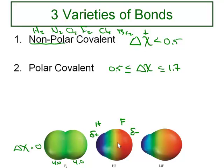Because the electrons are not evenly shared, the bond always has a positive and a negative end. We can use a dipole arrow to show the electron distribution. The arrowhead points toward the negative side of the bond — the fluorine end — and the tail is at the positive end — the hydrogen end.